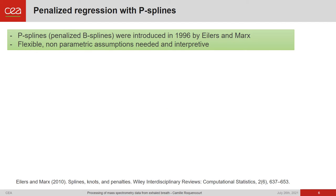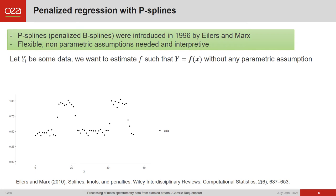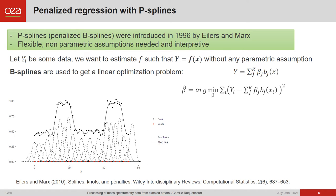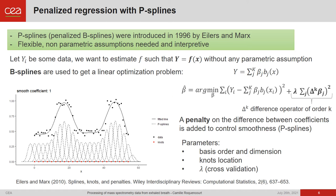We use P-splines for the temporal estimation. This method, developed by Eilers and Marx, is flexible, without parametric assumption, and interpretable. Let y_i be some data, and we want to estimate a function f such that y equals f(x) without any parametric assumption, where x represents the time. We use B-splines, which are basis polynomial functions spread over a set of knots represented in red, and we model y as a linear combination of the B-splines. This gives us a linear optimization problem. By adding a penalty difference on the coefficients, we can control the smoothness of the fitted line.